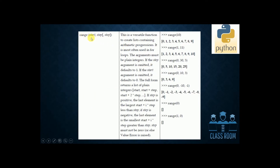This is the range function: range(start, stop, step). This generates specific arithmetic progressions. The start, stop, and step are the arguments.